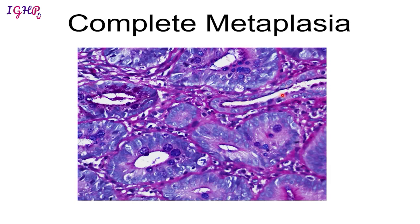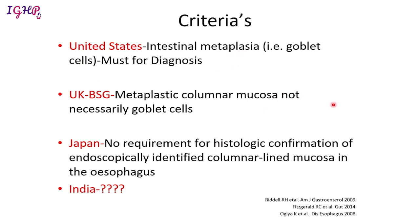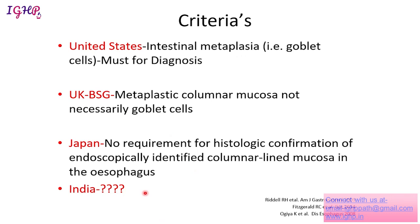There are different criteria for the diagnosis of Barrett's esophagus, with differences between western and eastern populations. Americans believe goblet cells are a must for diagnosis. The British believe that even without goblet cells, if columnar lined mucosa with prerequisite features is present, it can be called Barrett's. The Japanese believe no histological confirmation is required — endoscopic confirmation alone suffices. As Indians, we take advantage of all these approaches and can utilize all of them together to diagnose Barrett's.